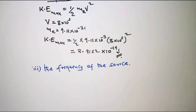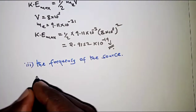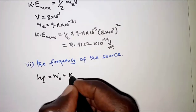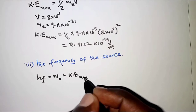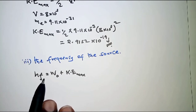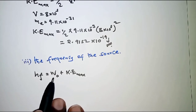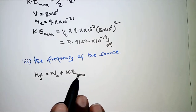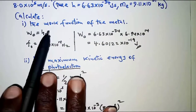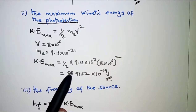Lastly, we need the frequency of the source using Einstein's equation of the photoelectric effect: hf = W₀ + KE_max. This implies that a photon striking an electron on the metal surface is absorbed, and some energy dislodges the electron while the rest becomes kinetic energy. From parts one and two, we already have the work function and the maximum kinetic energy.